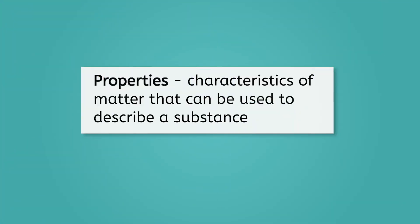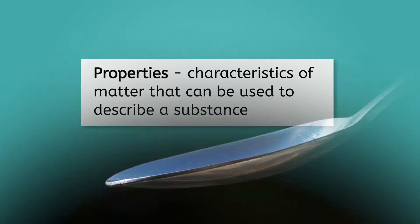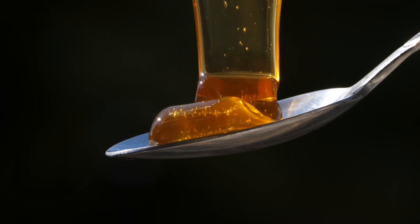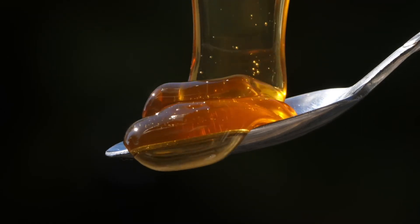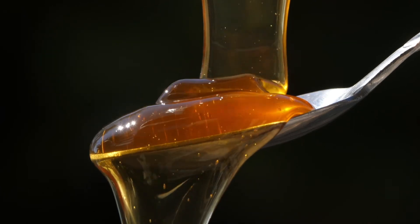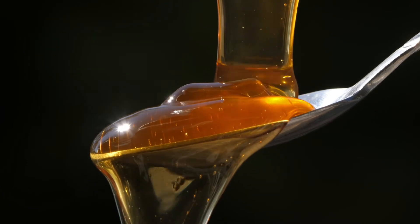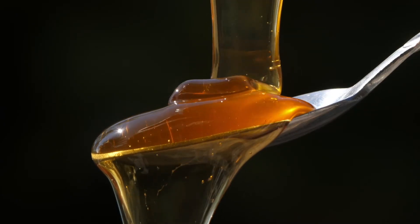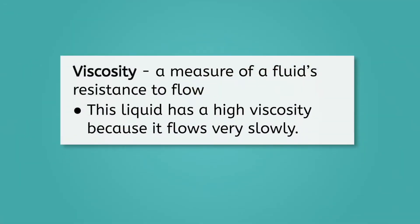All matter has properties that can be used to identify the substance. For example, the liquid from the opening. What are some things you notice that can help you identify it? Well, it has an amber color, and when you carefully watch it pour, it is thick and moves slowly, meaning it has a high viscosity. Viscosity is a measure of a fluid's resistance to flow. If you think about those two properties, golden color and a thick, slow flow, can you narrow down the identity of the substance to a few options?